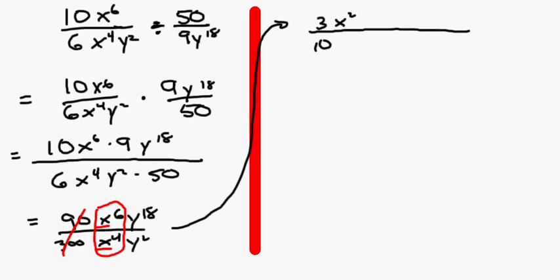Do the same thing again, but this time with the y's. The bases are the same. You subtract the exponents. The denominator's exponent from the numerator's exponent. 18 minus 2 is 16. So we have y to the 16th. Final answer: 3x squared y to the 16th over 10. We are done.